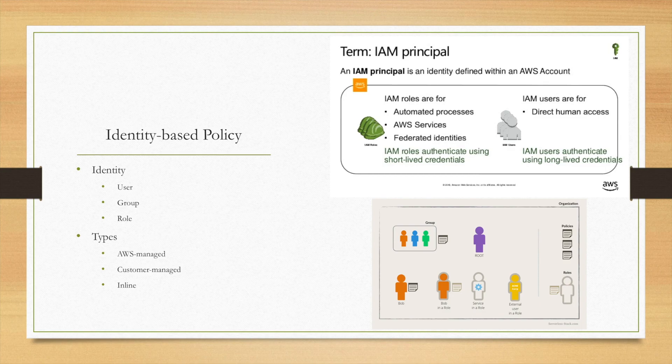For the identity-based policy, it has three types: the first is AWS-managed, the second is customer-managed, and the third is inline. As a best practice, we should always start with the AWS-managed policy, and then change to customer-managed for better security. We can also add conditions.